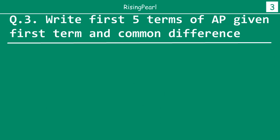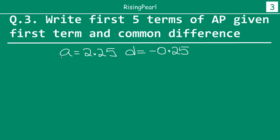Let's take a look at one more example. In this case, how about we start at something like A equals 2.25. Let's take a decimal number and say our common difference for this arithmetic series is given as minus 0.25. So if the first term is this and the common difference is this, how can we find out the first 5 terms? We will again use the same approach.